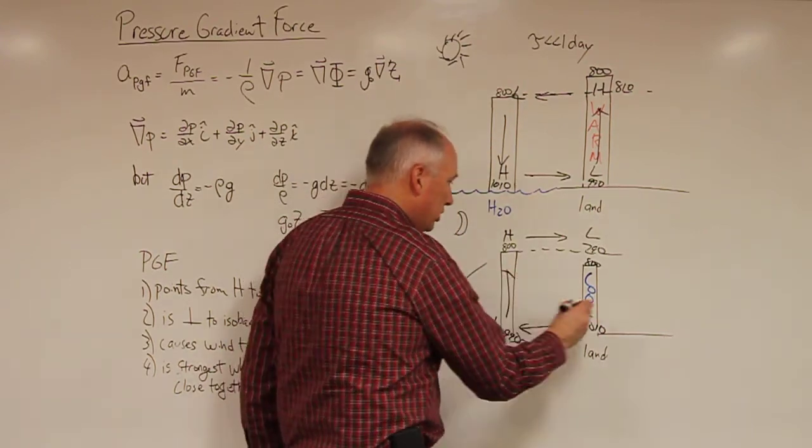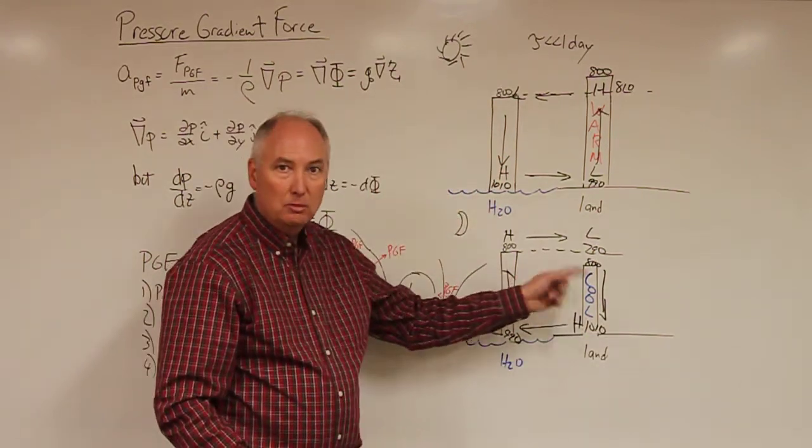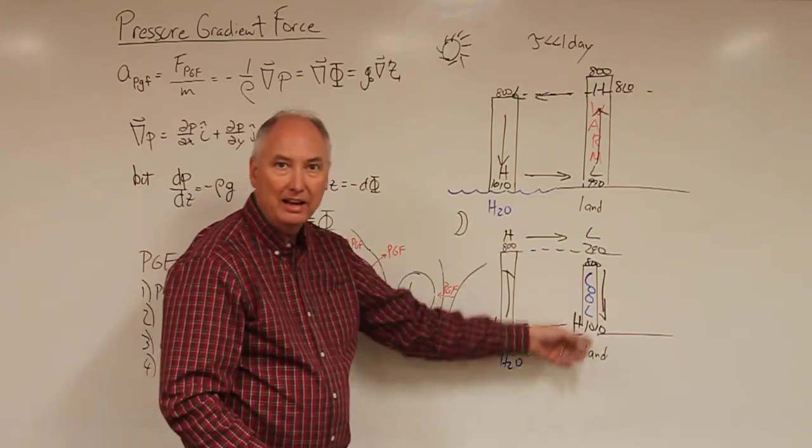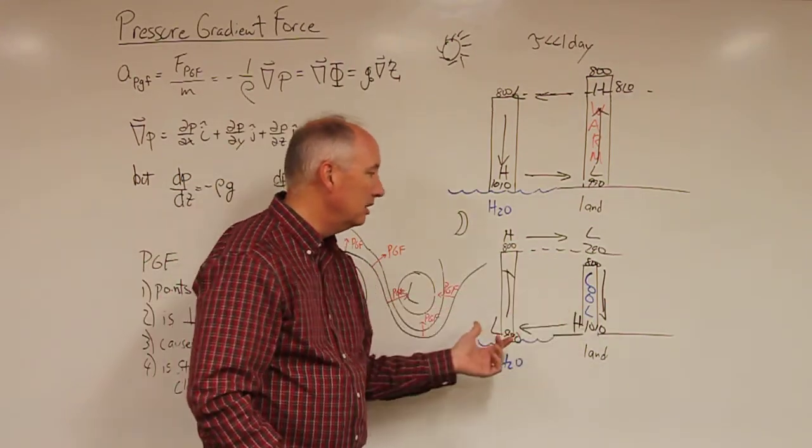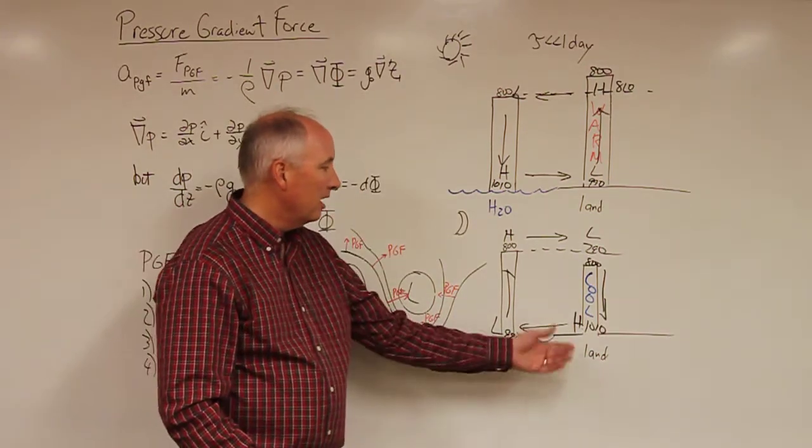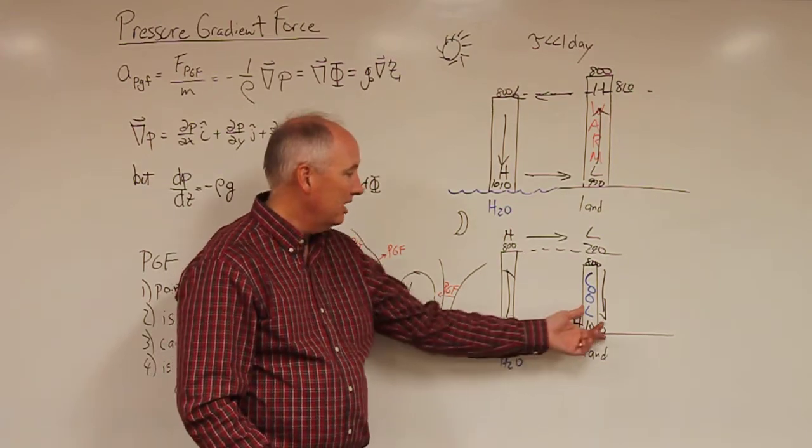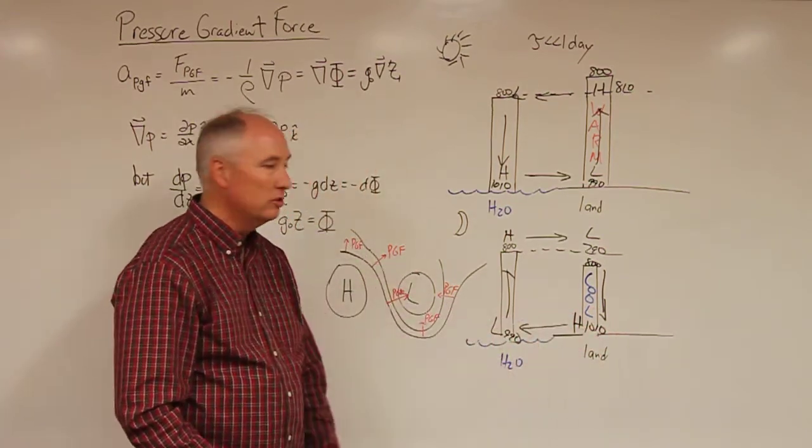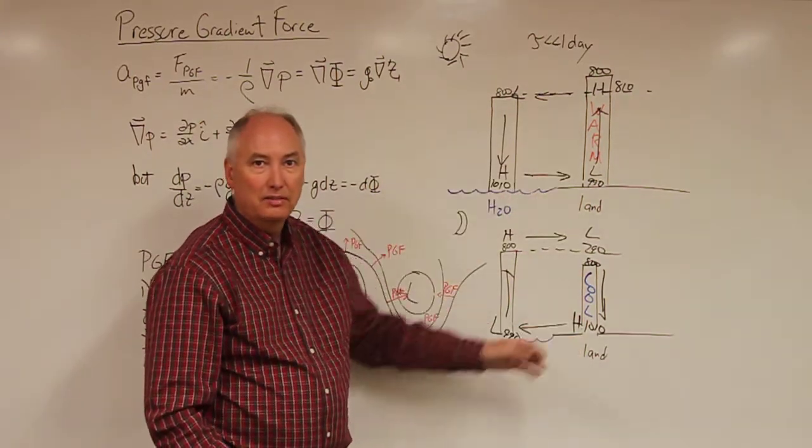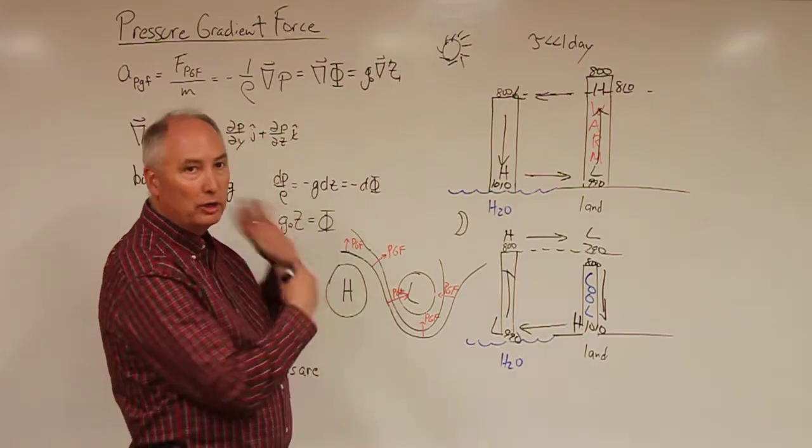And to complete the circulation, we now have a thermally direct circulation, but it's now in the opposite direction at night due to the differential heating, or in this case cooling, of the land surface and the water. We would refer to this as a land breeze because the air is coming from the land towards the water. And both of these are essentially examples of a thermally direct circulation driven by pressure gradient force.